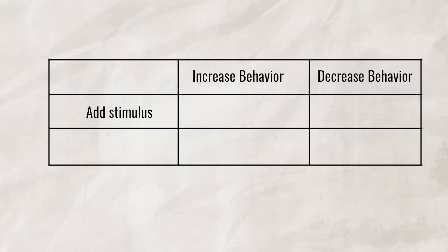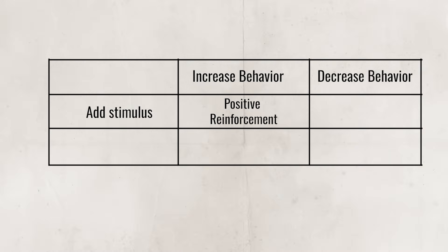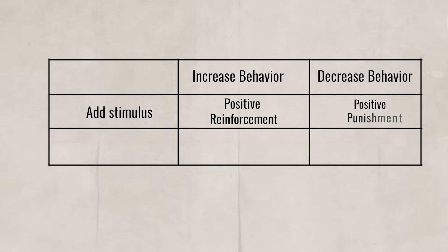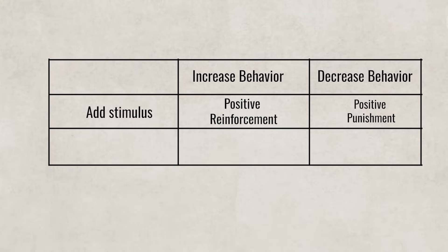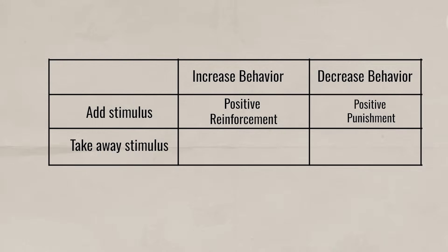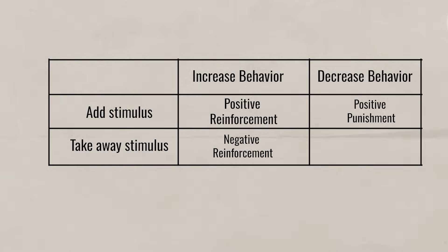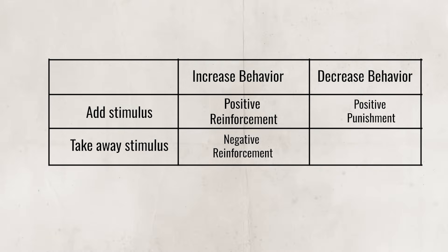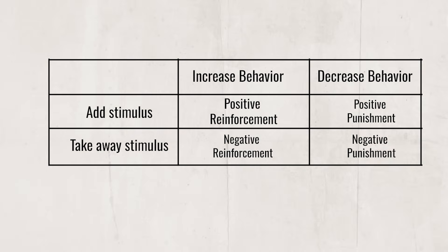At the end of the day, just remember: if a stimulus is being added and it increases the behavior, it is positive reinforcement. If the added stimulus decreases the behavior, it is positive punishment. If a stimulus is taken away and the behavior increases, then it is negative reinforcement. And lastly, if a stimulus is taken away and the behavior decreases, it is negative punishment.